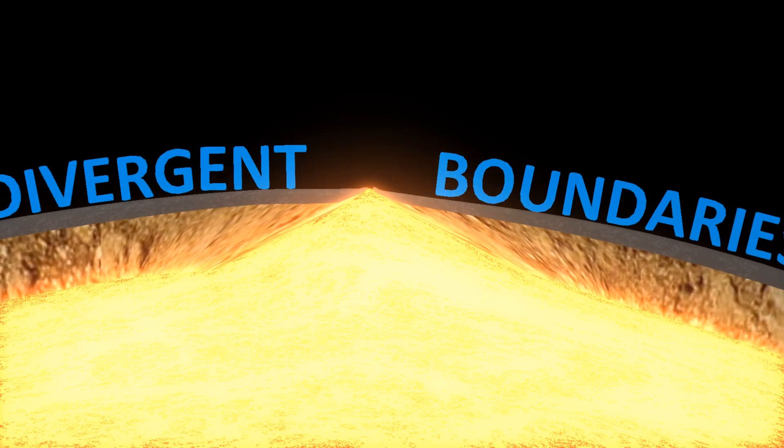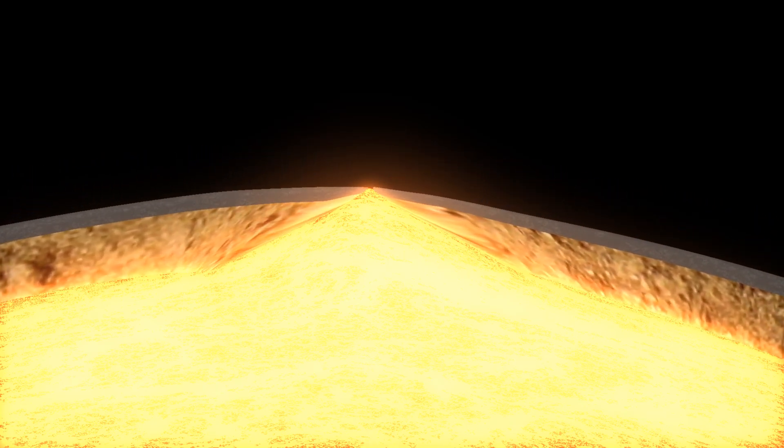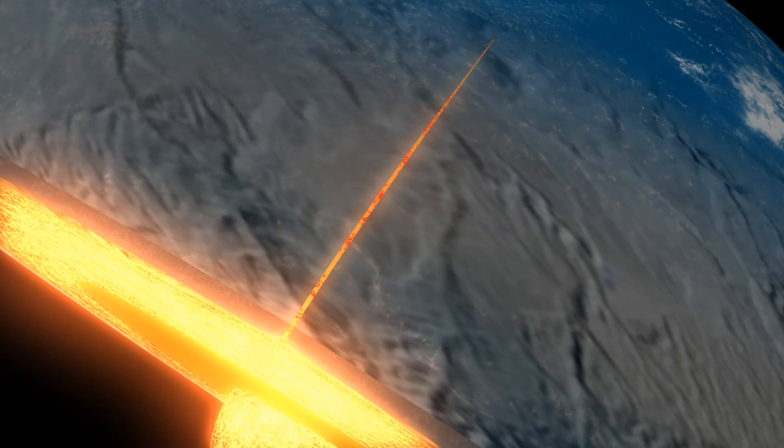At divergent boundaries, plates are pulling apart. Rock from the asthenosphere rises to the surface and becomes new lithosphere, mostly in the middle of the oceans, where this forms enormous rifts.